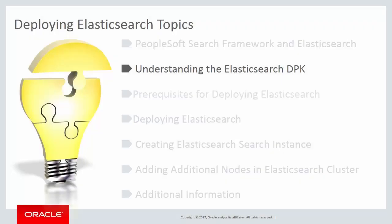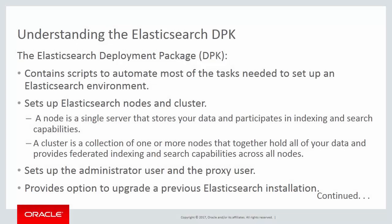The Elasticsearch deployment package contains scripts to automate most of the tasks needed to set up an Elasticsearch environment. The Elasticsearch DPK sets up the Elasticsearch cluster in one or more nodes. A node is a single server that stores your data and participates in indexing and search capabilities. A cluster is a collection of one or more nodes that together hold all of your data and provides federated indexing and search capabilities across all nodes. The DPK also sets up the administrator user and the proxy user, and the setup script provides an option to upgrade a previous Elasticsearch installation.